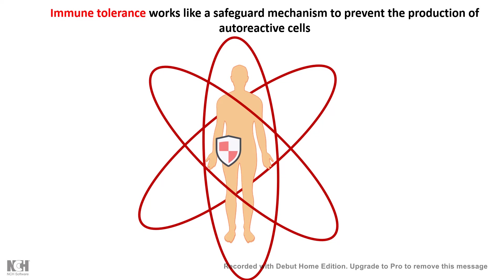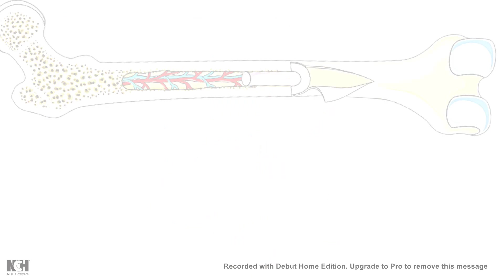Immune tolerance can work at two different levels: central tolerance and peripheral tolerance. The mechanism is employed on both T cells and B cells, and we will learn about both and at least have a bird's eye view. Let's talk about B-cell development first to understand the tolerance mechanism.